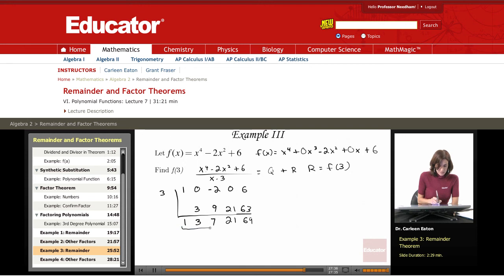This is the quotient. This is the remainder. Since the remainder is 69, f of 3 equals 69.